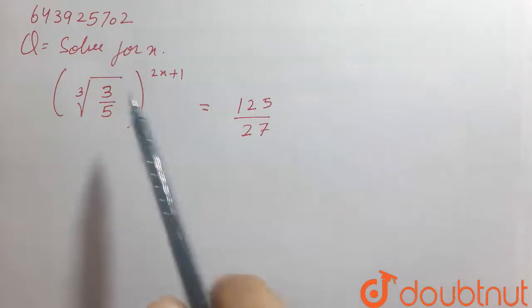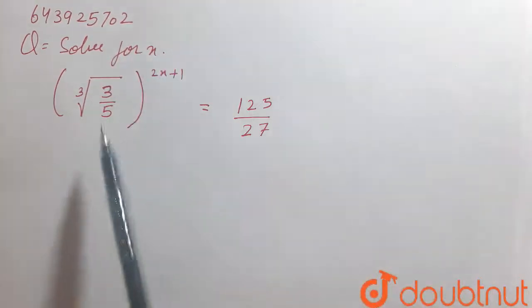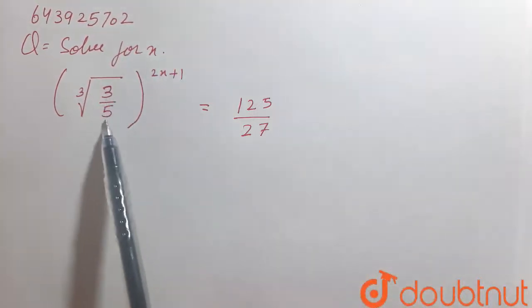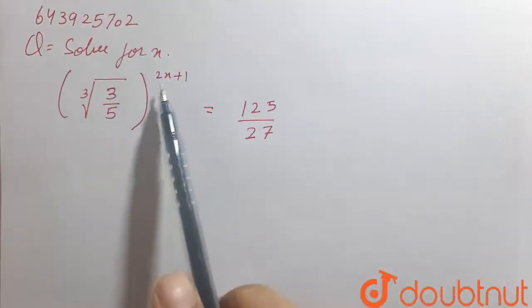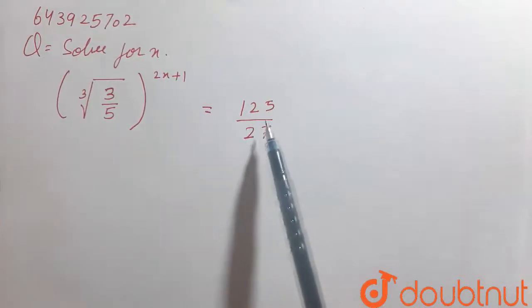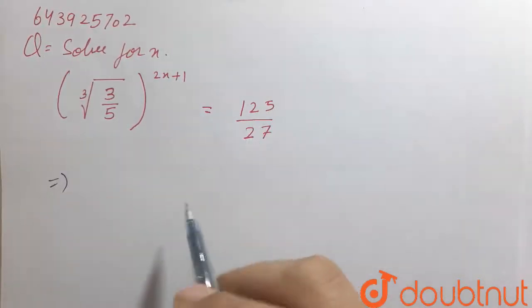Hello friends, our question is: solve for x where the cube root of (3/5) to the power 2x plus 1 equals 125 over 27.